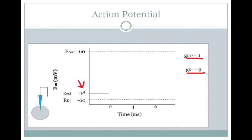Remember, these are made-up numbers; they're fairly close to reality, but each individual neuron, depending on the species, will have a different resting membrane potential. That's all driven by relative conductances for potassium and sodium, and you can use the Goldman equation to figure this out.